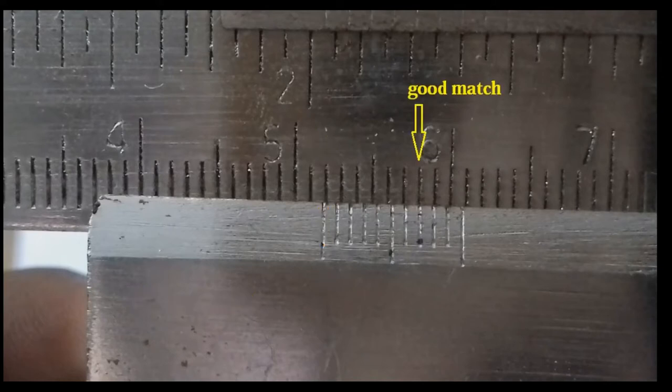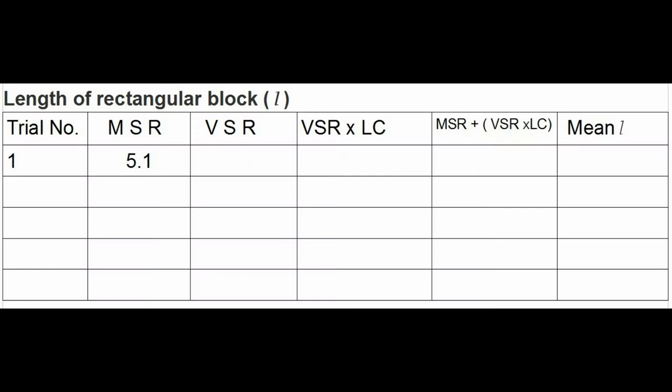Now, at the same time, we will find the VSR or Vernier scale reading. For that, we will look for the correctly matched Vernier scale reading with any one of the main scale markings. That is, we identify that Vernier scale marking that is in good alignment with any one of the main scale. In this case, best matched one is 7. So here VSR is 7.